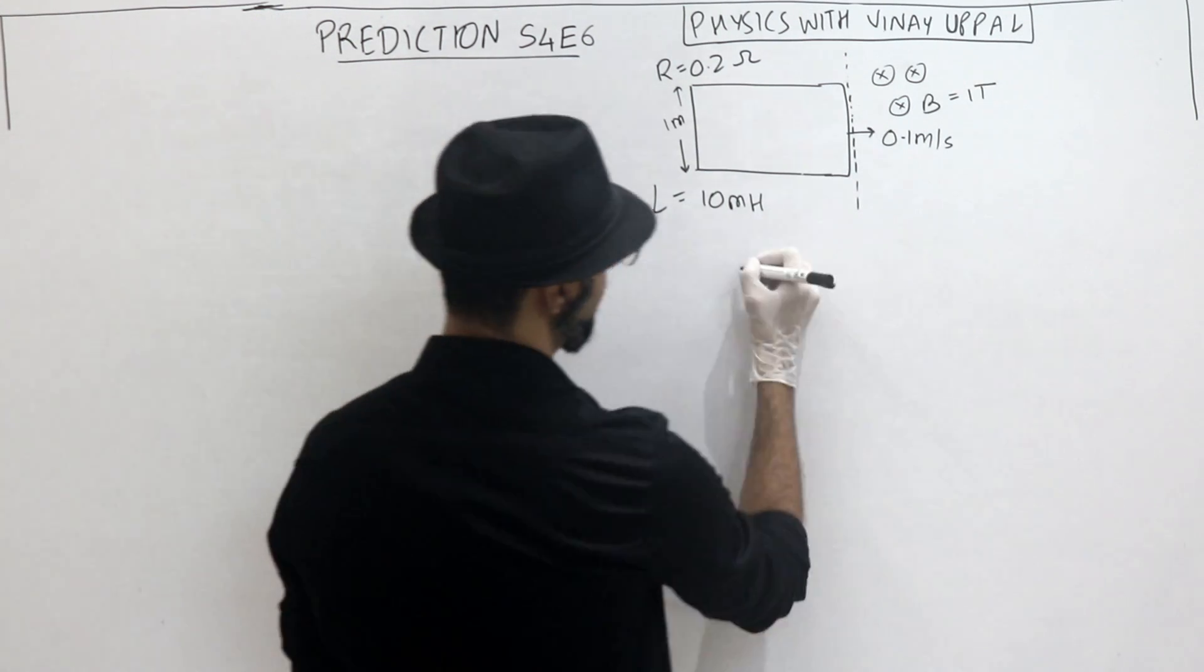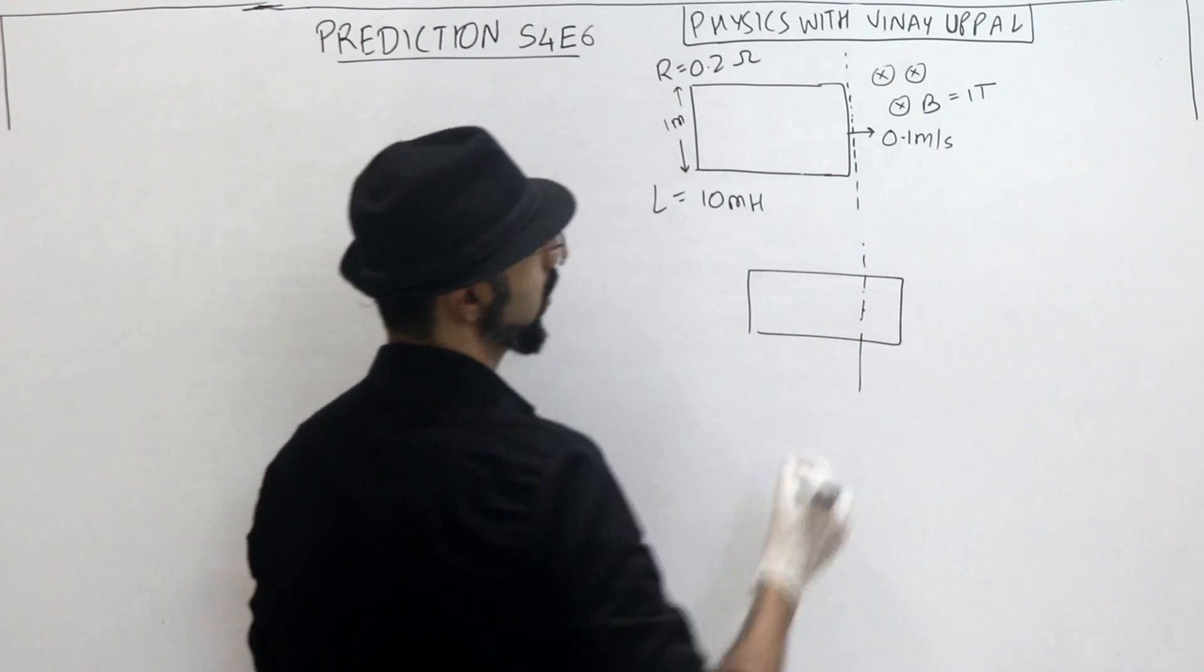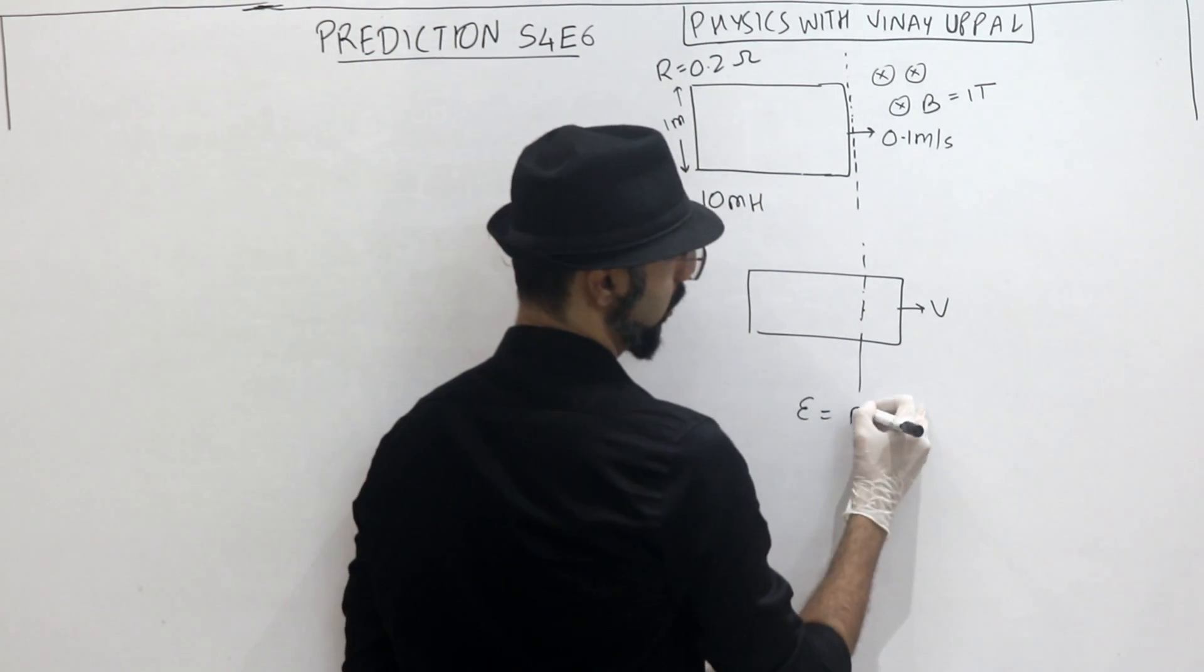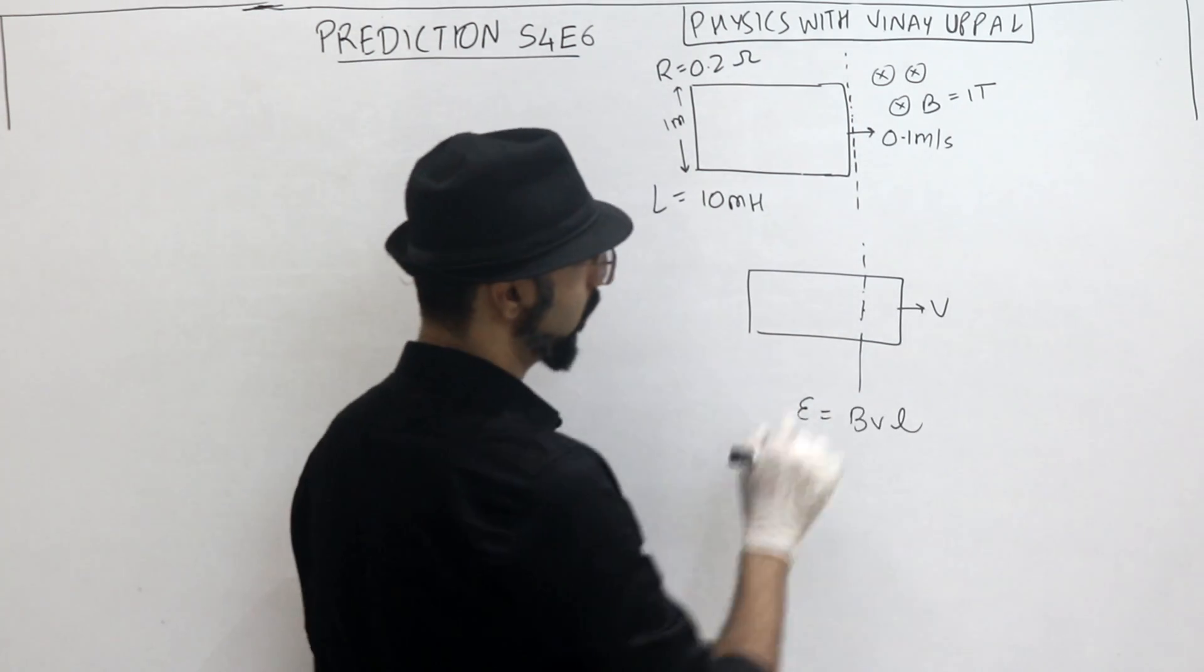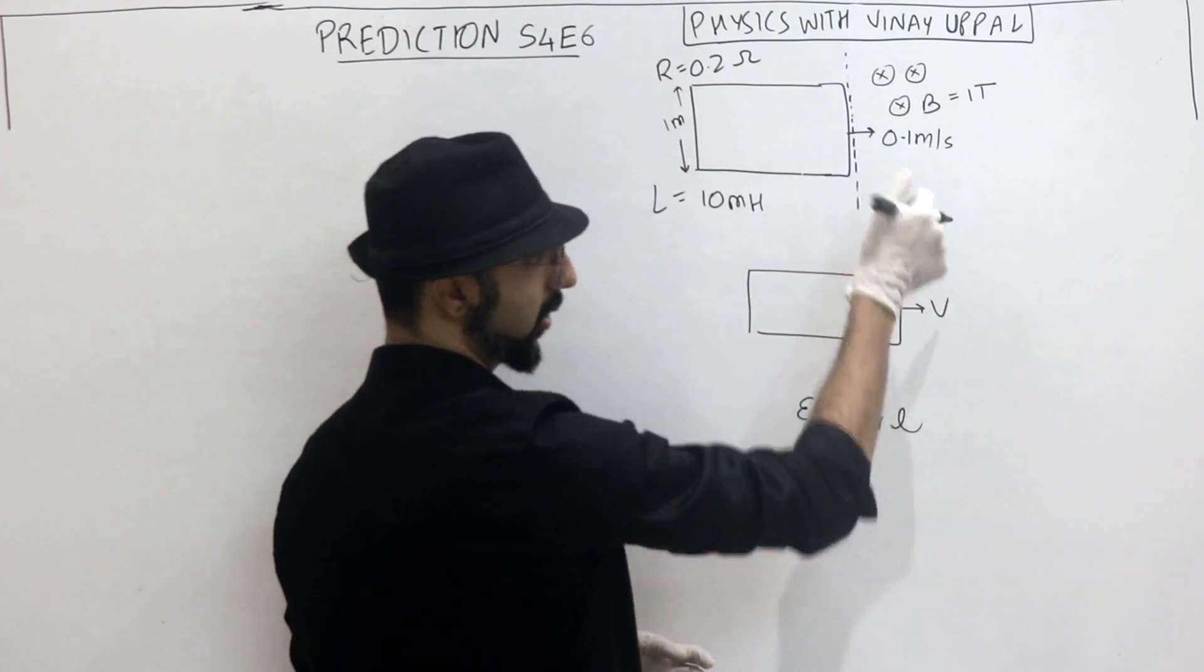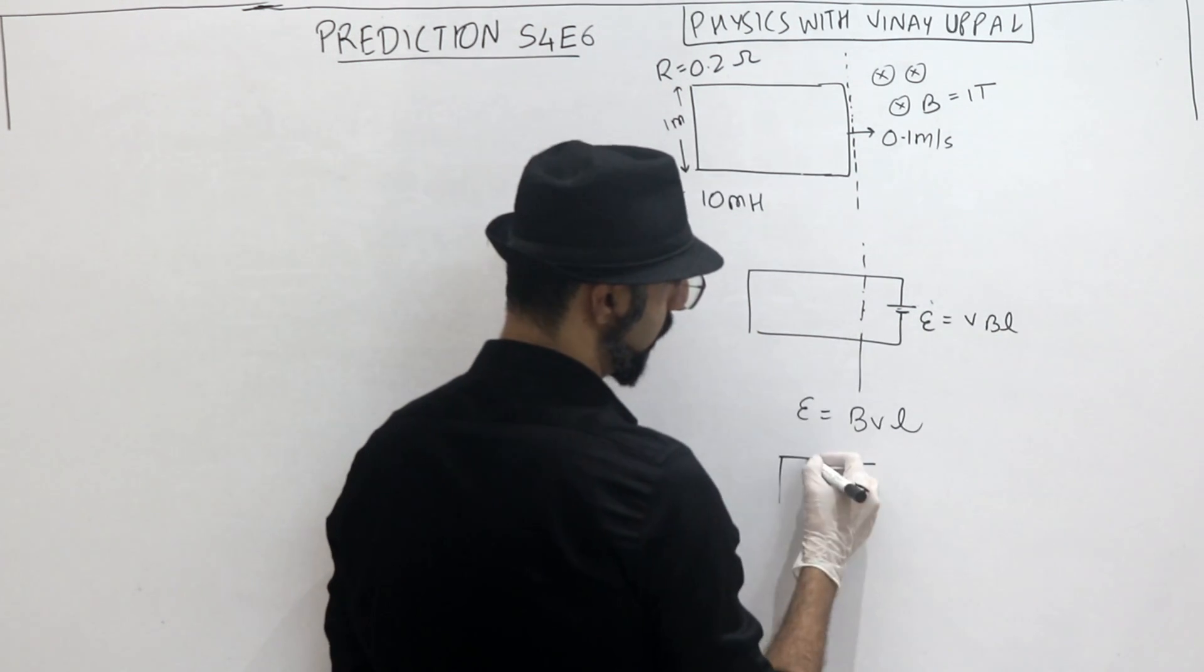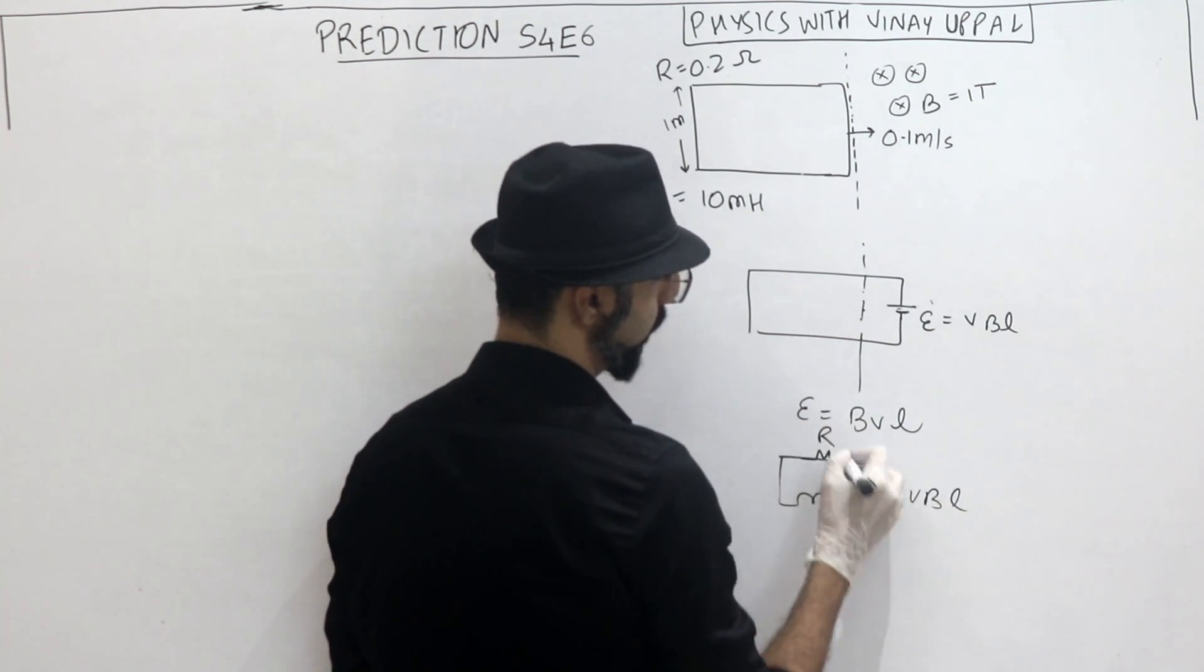Alright, so what is going to happen is when it enters the magnetic field, because it has some velocity, the motional EMF will come. How much motional EMF will come? BVL. Right? So V cross B is in the direction of polarity. So V cross B. B is inwards, V is to the right. V cross B is in this direction. So can I say that the circuit diagram is in this direction. So it's like my circuit diagram would have a resistance and inductance. This is the corresponding circuit diagram.